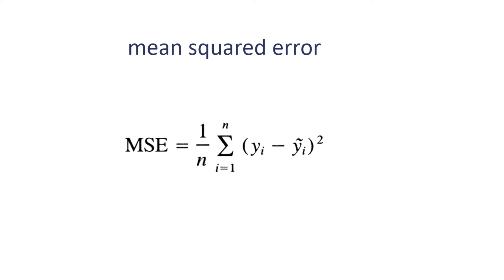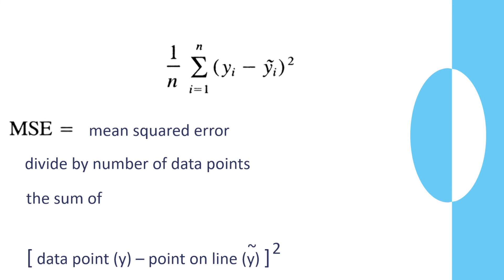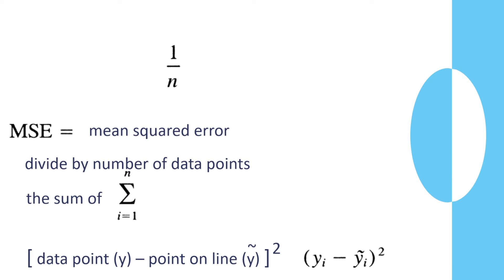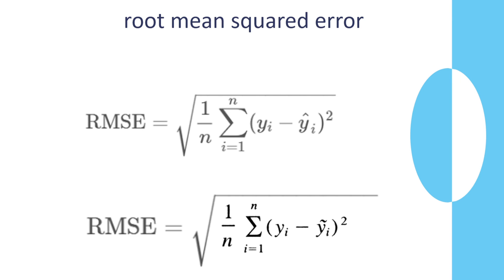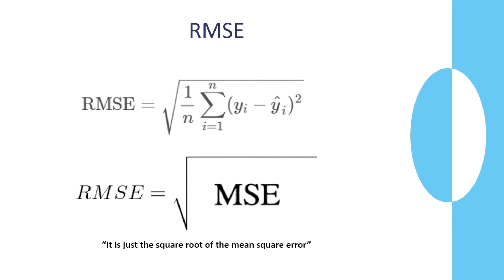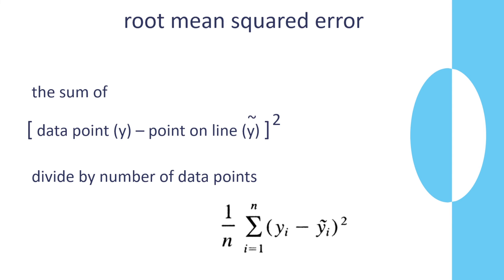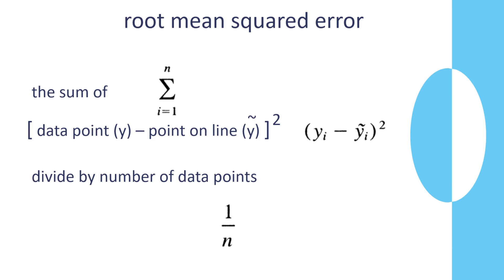Now for evaluation metrics — mean squared error. MSE is the difference between the data points and the line, squared, summed up, then divided by the number of data points — hence the 'mean' in mean squared error. Root mean squared error is the same but we take the square root of the mean squared error. So it is simply the square root of MSE: the sum of squared residuals divided by the number of points, then the root of that.